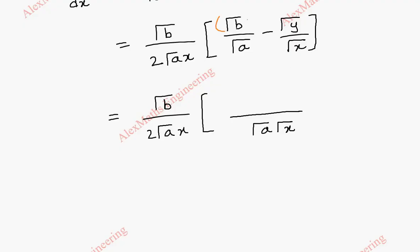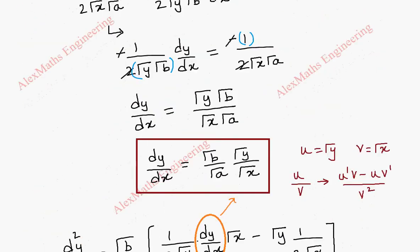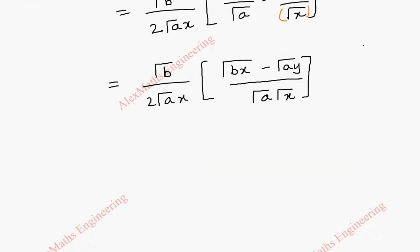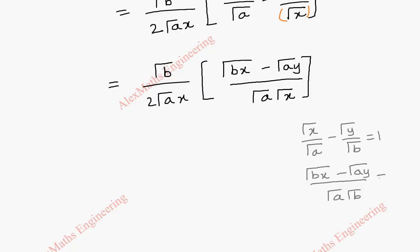Taking LCM with denominator root a root x, multiplying through we get root b x and root a y as the two terms in the numerator. From the original curve equation, root x by root a minus root y by root b equal to 1. Taking LCM as root a root b gives root b x minus root a y equal to root a root b. So the numerator expression equals root a root b, which we will substitute.